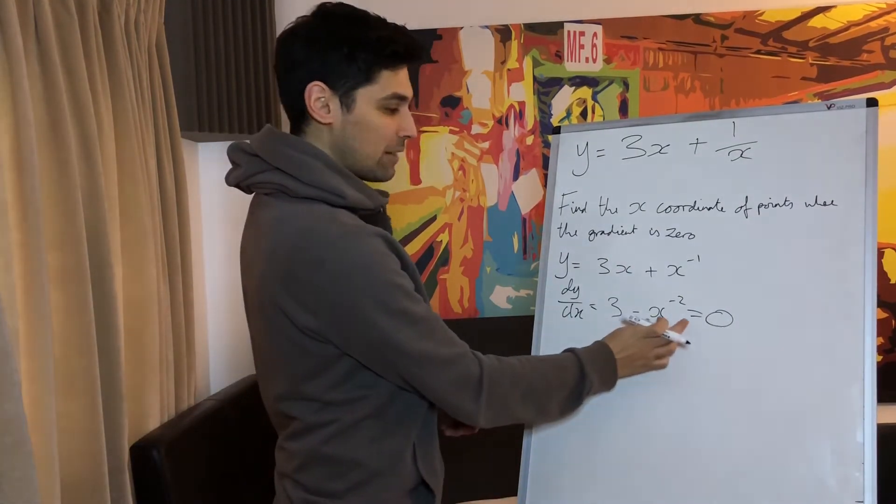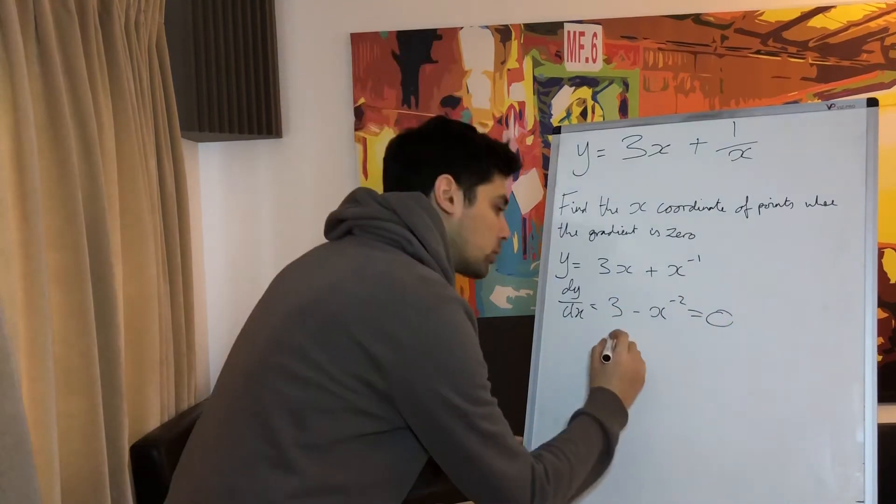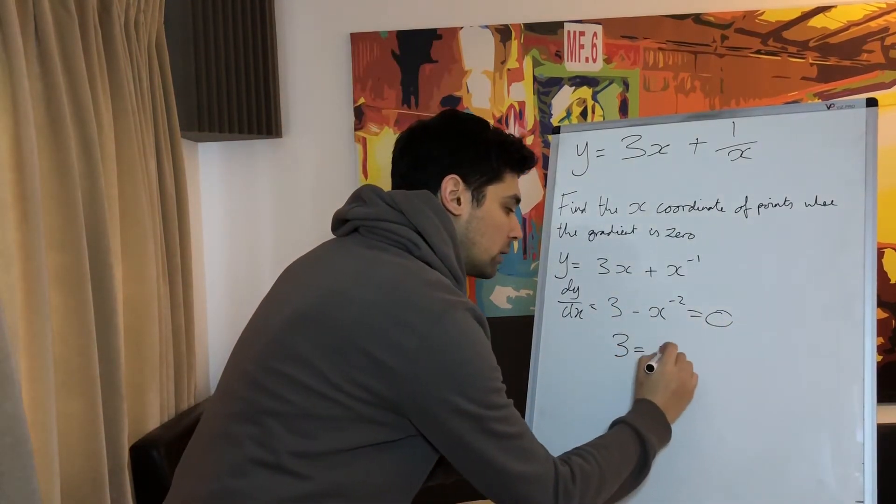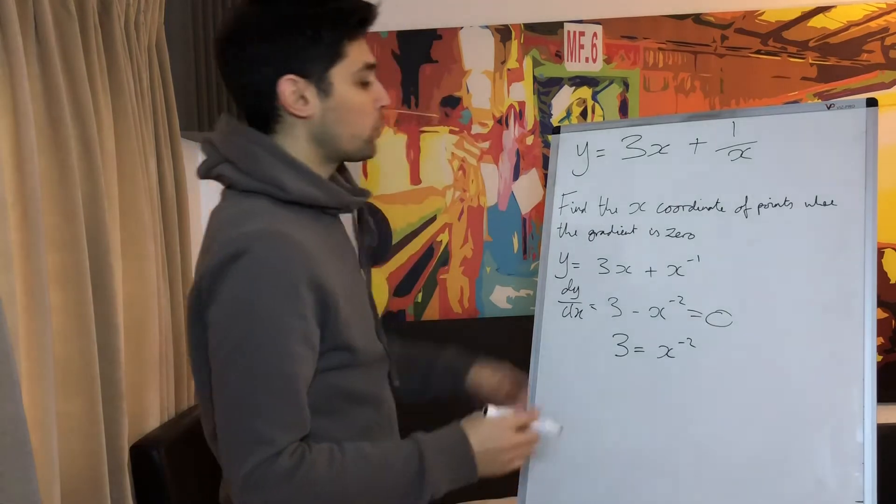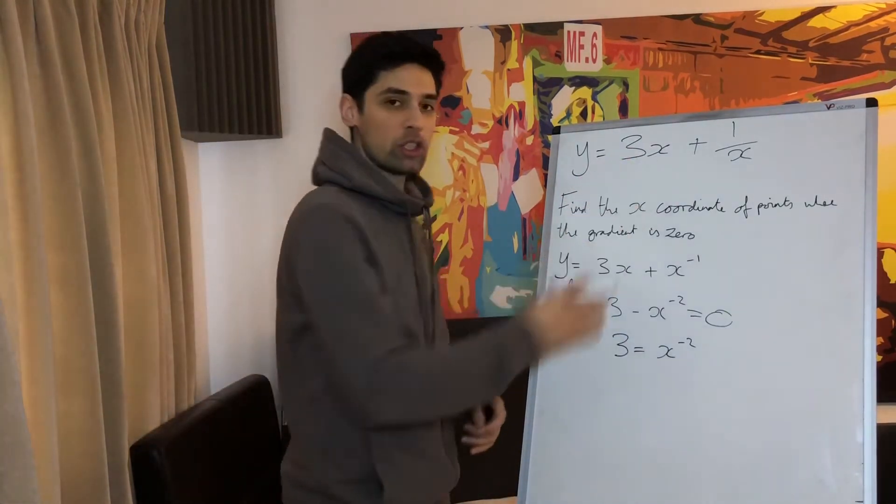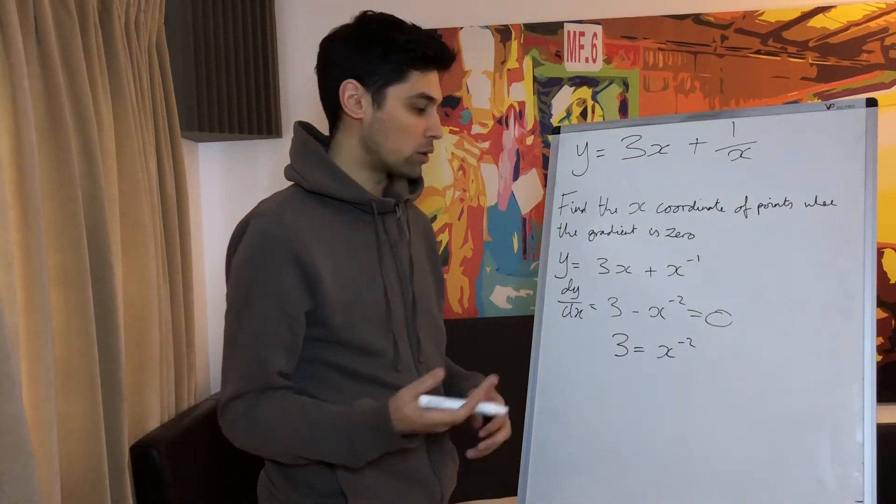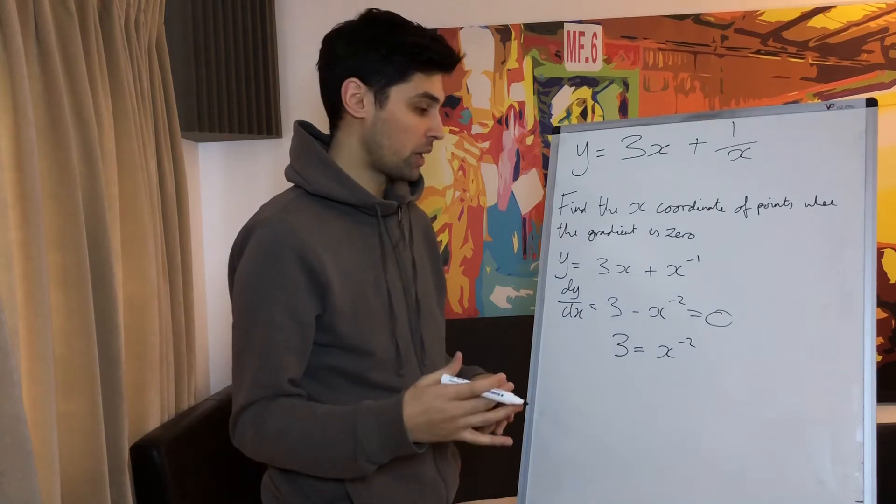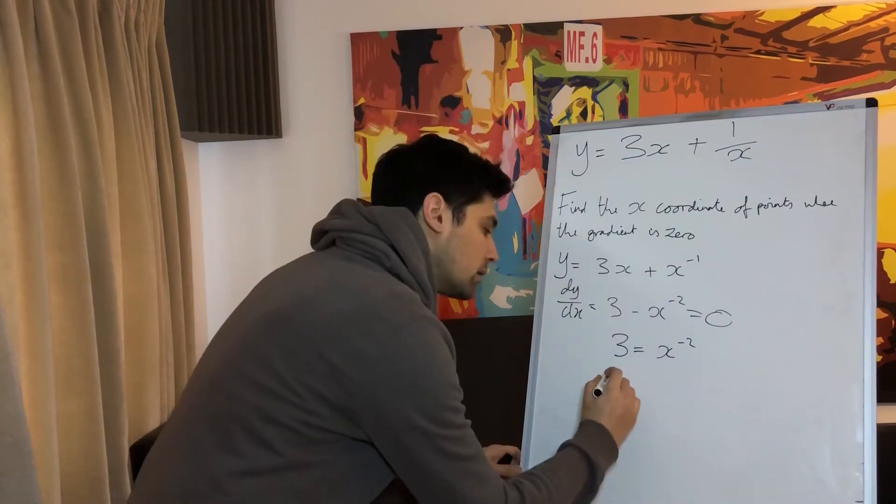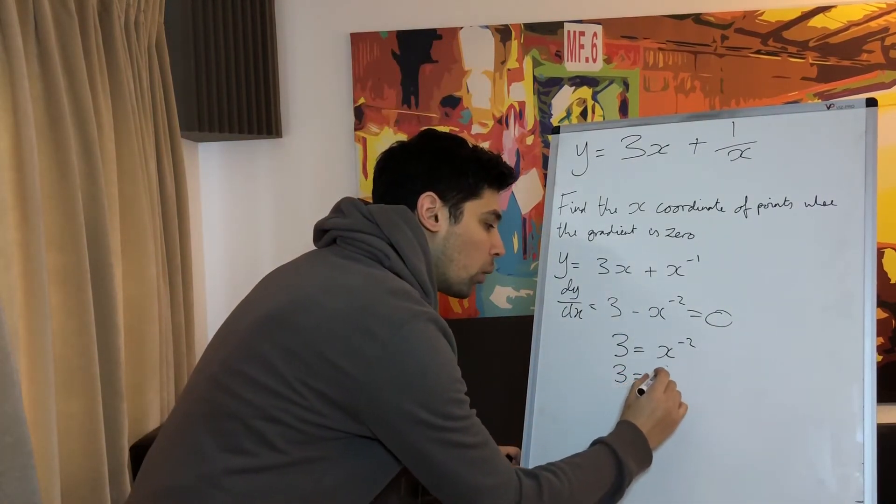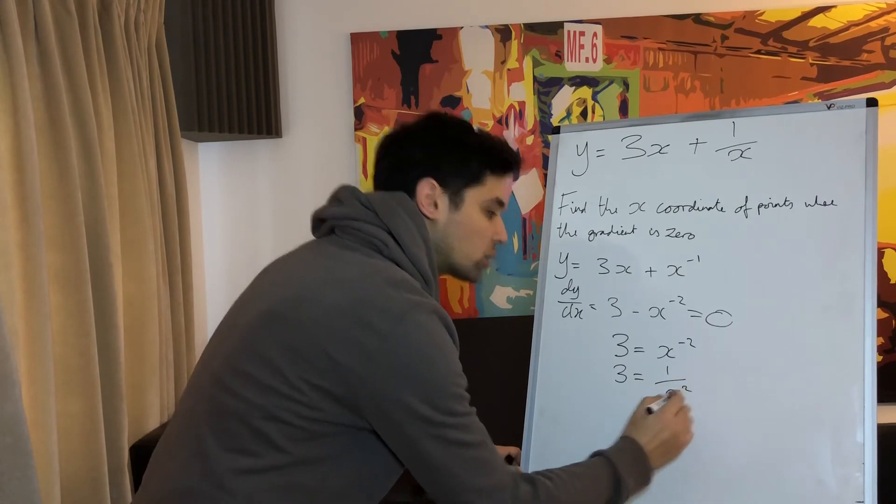So how about, because this is a negative x to the minus 2, let's add it over to that side. So we've got 3 equals x to the minus 2. Now we like negative powers when we're differentiating. We don't like negative powers when we're having to manipulate expressions. So let's actually change that to 3 equals 1 over x squared.